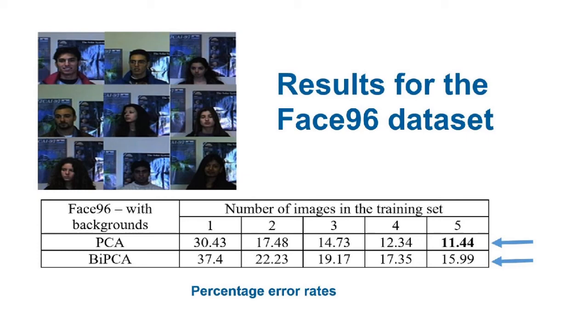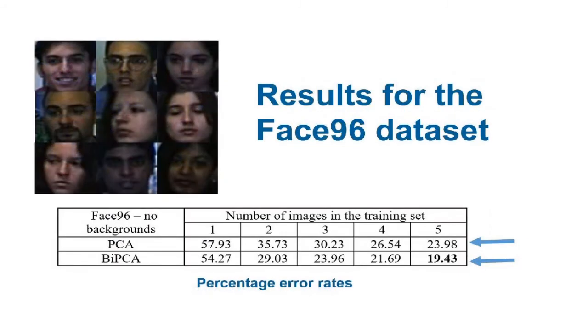Now the reason for this is if you look at these images on the Phase 96 dataset, there's significant clutter at the background, so obviously the biharmonic operator is taking these into account. But if you crop the faces, if you enhance, if you crop the faces and a significant proportion of the faces are on the image, then we are indeed getting better results compared to just applying the PCA.